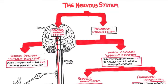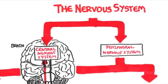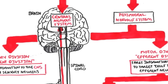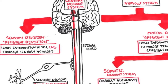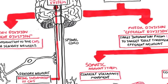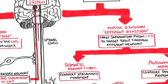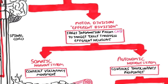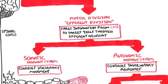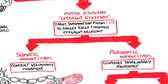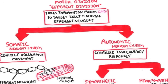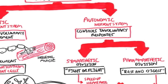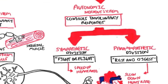To recap: the two main systems are the central nervous system and the peripheral nervous system. The central nervous system is the brain and spinal cord. The peripheral nervous system has the afferent division, which brings information to the CNS, and the efferent division, which takes information from the CNS to a target cell — either voluntarily via the somatic nervous system or involuntarily via the autonomic nervous system. The autonomic nervous system is further divided into the sympathetic and parasympathetic responses, which contradict and do opposite things to each other.